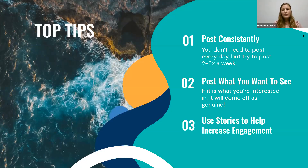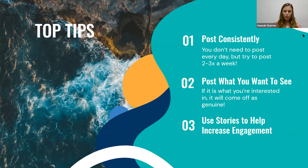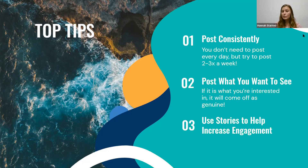Now we're going to talk about some of my top tips. First is to post consistently. You don't need to post seven days a week — two or three times a week is a good number to start with. It's not so much about posting a lot as posting consistently. If you're going to post twice a week, post on Monday and Thursday. That way there's a pattern, your followers know what to expect, and it helps the algorithm so more people will see your post.